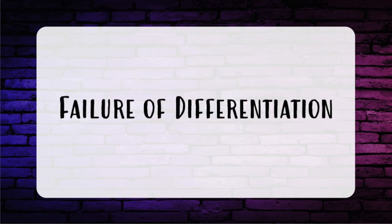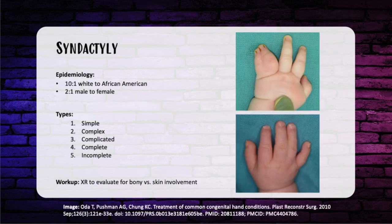Moving on to failure of differentiation of parts — when the parts are there but have some kind of abnormality. Let's start with one of the most common congenital hand anomalies: syndactyly. It's ten times more common in whites than blacks, twice as common in men than women, and about 50-50 unilateral versus bilateral. The long finger and ring finger are most commonly affected, whereas thumb and index finger involvement is rare — if you see that, think cleft hand. It's autosomal dominant.